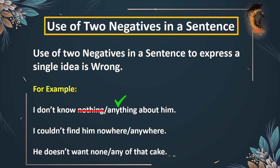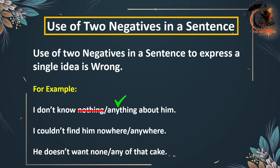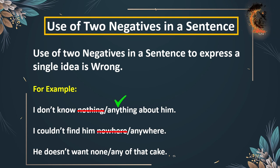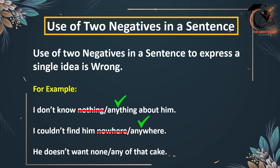The next sentence is: 'I couldn't find him nowhere or anywhere.' We cannot use 'nowhere' in this sentence because we have already used a negative — 'couldn't' — at the start. So we cannot use another negative in the same sentence. The correct sentence becomes: 'I couldn't find him anywhere.'